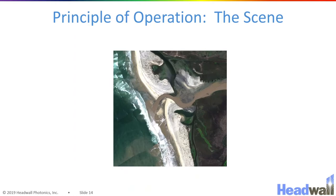So how do Headwall's hyperspectral imagers collect a continuous spectrum at every spatial pixel in a scene? Here we're going to go over how the hyperspectral imagers work, look at the internal optics of the system, and talk about how data is actually collected. To gather any digital image, a scene is divided up into pixels.